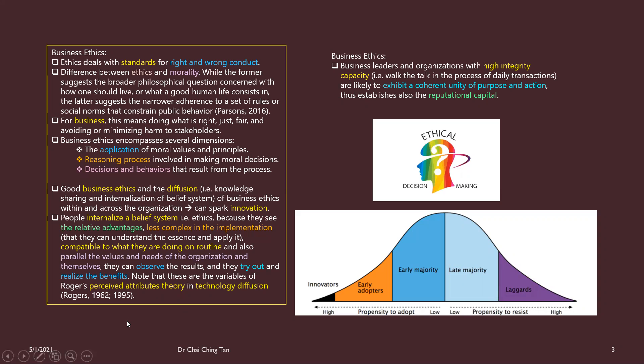The theory covering this is called Perceived Attribute Theory — people buy into ideas through their perceptions of different attributes: complexity/simplification, observability, trialability. If an innovative product is not complicated to try, people will adopt it. Switching costs — the time and effort required — also affect willingness to adopt, as people may not have sufficient time to learn something new.